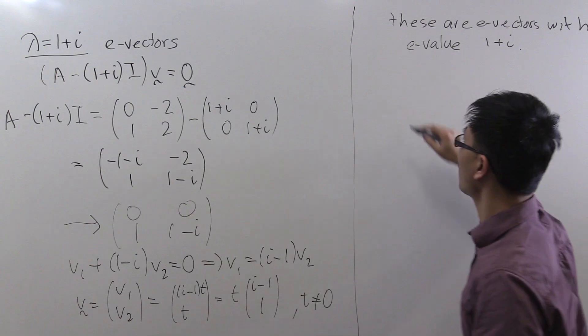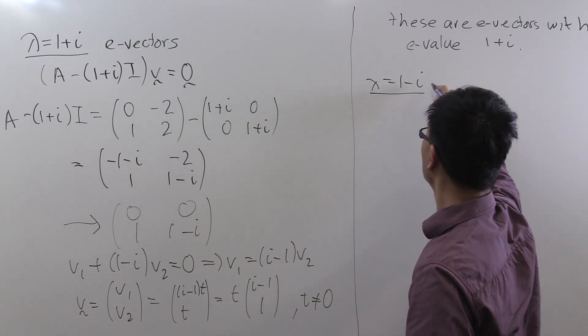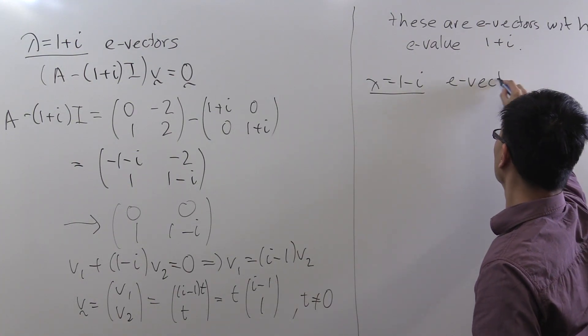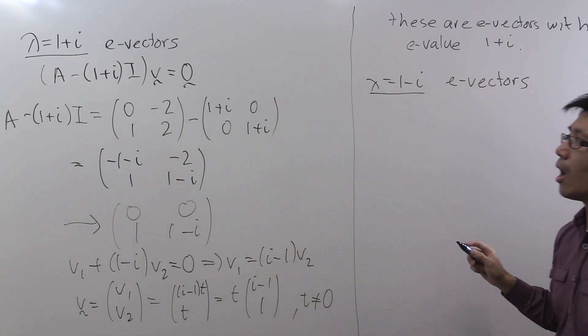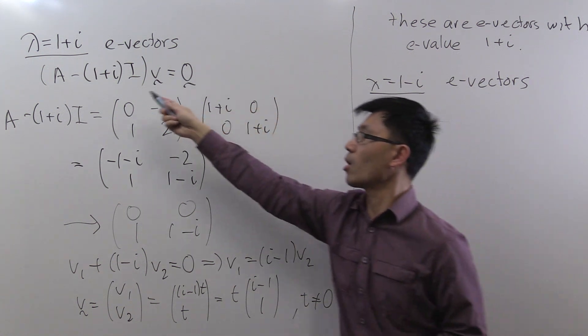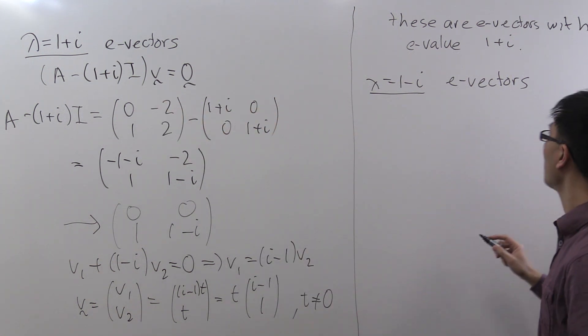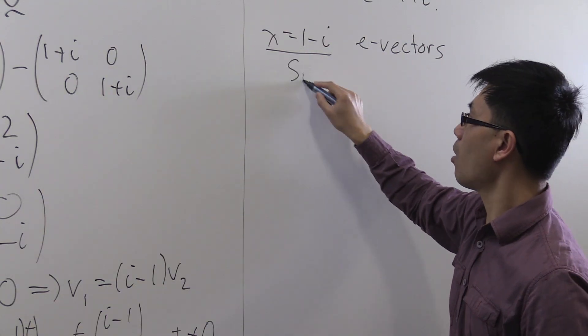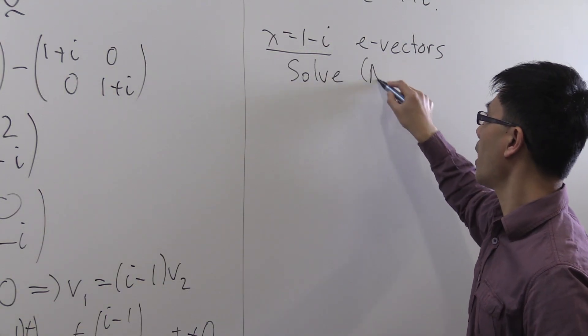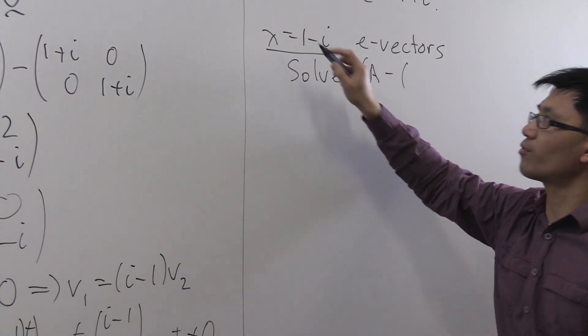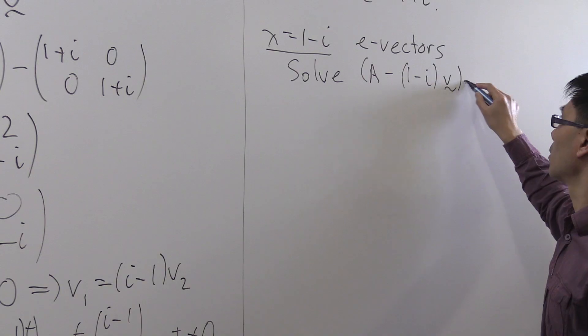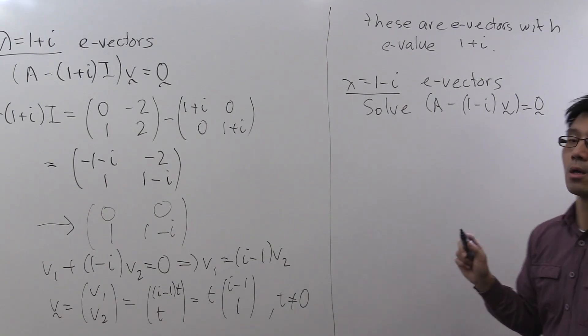Let's look at the other eigenvalue, which is lambda equals 1 minus i, and compute its eigenvectors. And we just do the same thing. We solve the corresponding equation A minus lambda I, v equals 0. So we solve A minus, and the only difference is lambda now is 1 minus i.